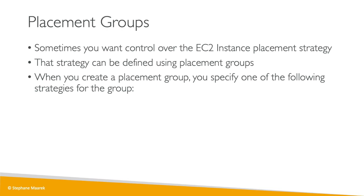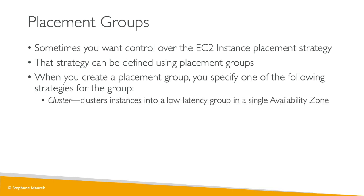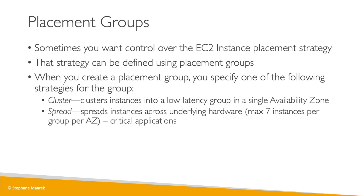When you create a placement group you have three strategies available. You have the cluster placement group in which your instances will be grouped together in a low latency hardware setup within a single availability zone — this gives you high performance but high risk. Spread means that your instances are going to be spread across different hardware, but there is a restriction: you can only have seven EC2 instances per placement group per AZ, so you would use a spread placement group when you have critical applications.